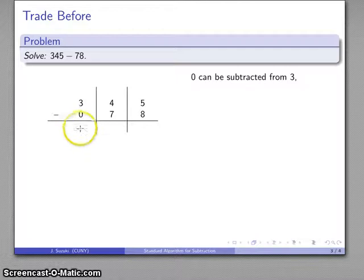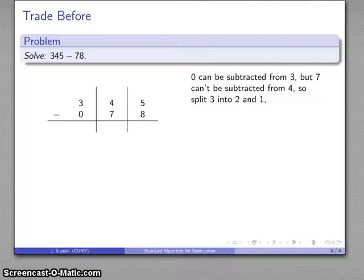Now, I can certainly subtract 0 hundreds from 3 hundreds. That's not a problem. But in the other two columns, I have a problem. I have 7 tens I want to take away, but I only have 4 tens to do that. I can't subtract 7 tens from 4 tens.